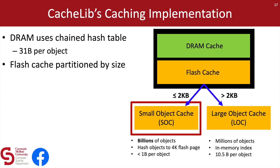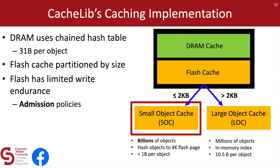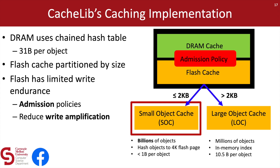Because of the size of the objects stored, the large object cache stores only millions of objects, making it feasible to use an approximate in-memory index which requires only 10.5 bytes of DRAM overhead per object. Because the small object cache stores such small objects, it can potentially hold billions of objects, so an in-memory index is infeasible there. Instead, we hash objects directly to 4K flash pages, which can each store multiple objects — this approach uses less than one byte of DRAM overhead per object. The other major challenge in using flash for caching is that flash has limited write endurance. The main way we address this in CacheLib is through the use of an admission policy, which sits between the DRAM cache and flash cache and decides whether or not it's worth admitting an evicted item based on a prediction of whether the object is likely to be accessed again.